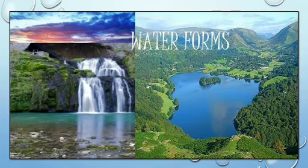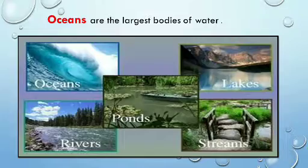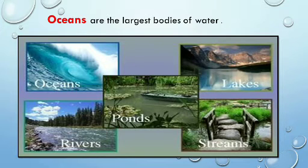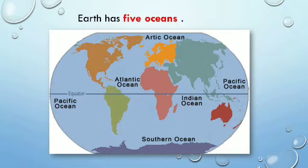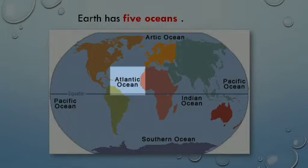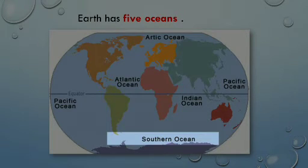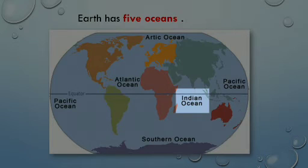Now let's check water forms. Oceans are the largest bodies of water. Other water bodies are seas, rivers, waterfalls, etc. We have five oceans in our Earth: Pacific Ocean, Atlantic Ocean, Arctic Ocean, Southern Ocean, and Indian Ocean.